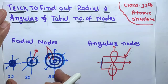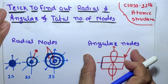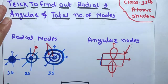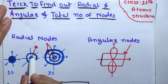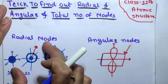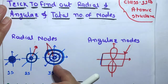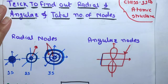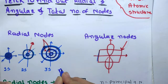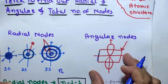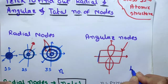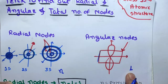Radial nodes are in spherical regions while angular nodes are in planes. Radial nodes have fixed radii, while angular nodes contain a fixed angle. The number of radial nodes in an atom is determined by the principal quantum number n, and the number of angular nodes is determined by the azimuthal quantum number L.